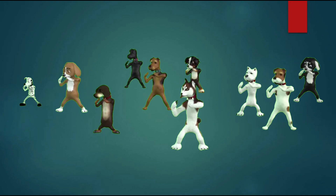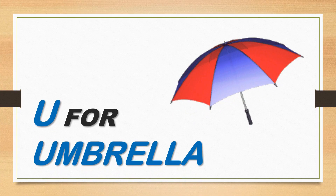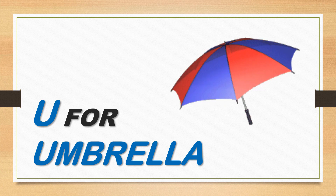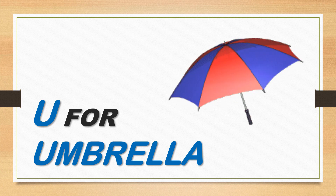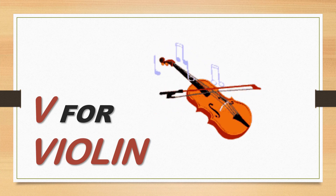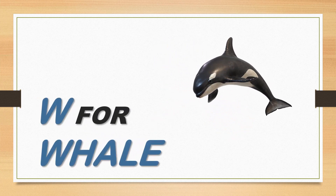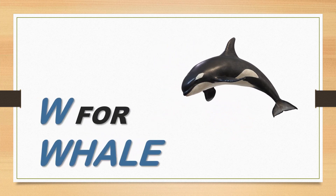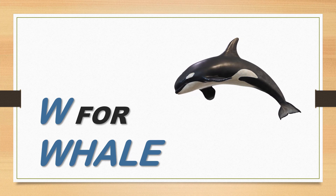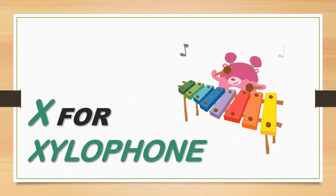U is for umbrella. U, umbrella. U, umbrella. V is for violin. V, violin. V, violin. V, violin. W is for whale. W, whale. W, whale. W, whale. X is for xylophone. X, xylophone.